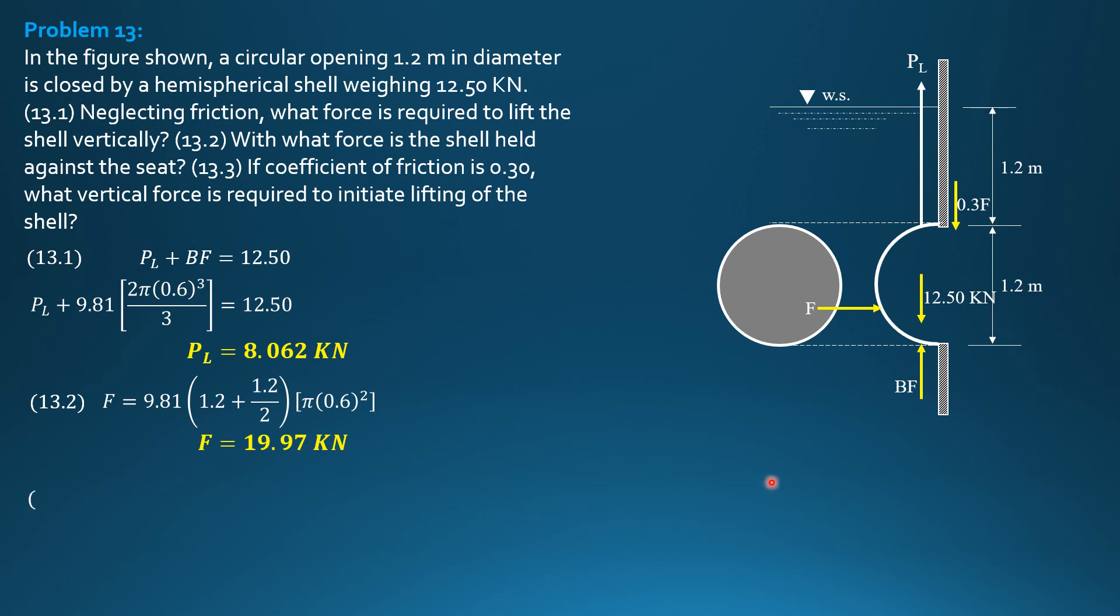So, summation forces Y equals 0. P sub L plus buoyant force equals 12.5 plus 0.3 of F. Substitute P sub L plus 9.81 quantity 2 thirds 0.6 cube over 3 equals 12.5 plus 0.3 of F. The shorter way is, it is 8.062, then you just add 0.3 of 19.97. The result is the same, 14.05 kN.